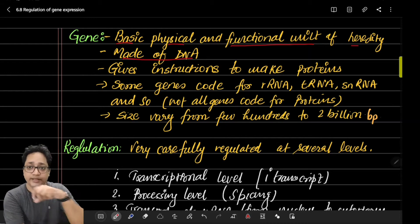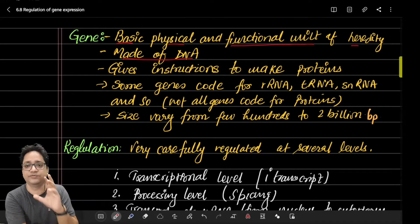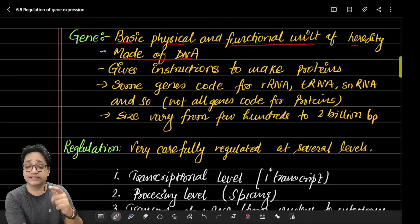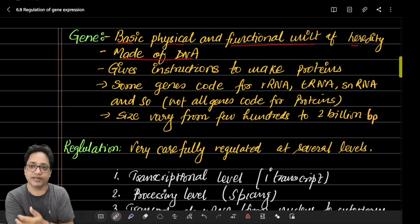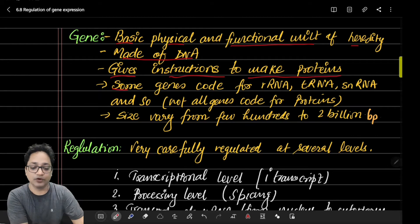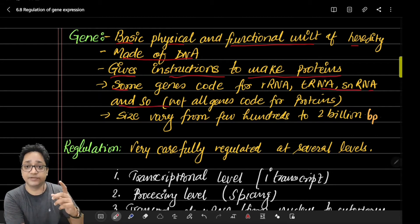A specific segment of DNA is confined for the production or synthesis of mRNA, tRNA, and ribosomal RNA. Through mRNA, genes code for amino acid sequences in a polypeptide chain, which ultimately works as a protein. This is the function of a gene. Some genes code for RNA such as tRNA, snRNA, and so on.